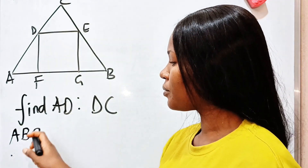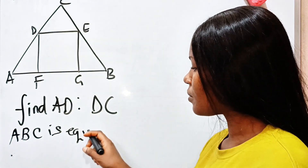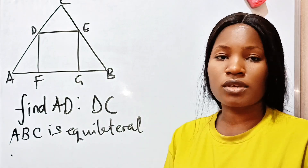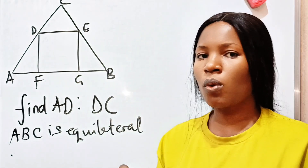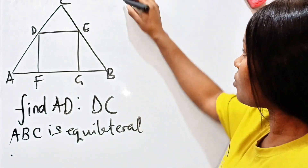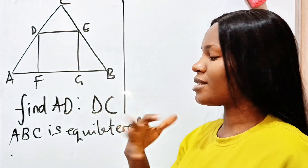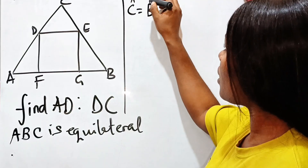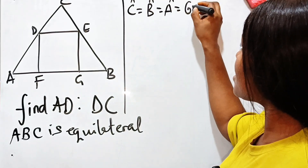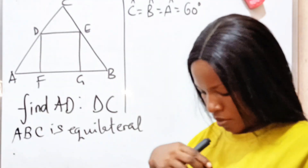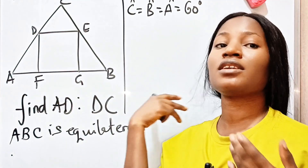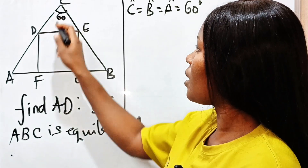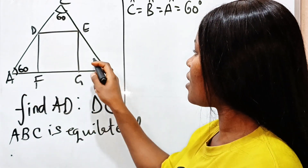So ABC is equilateral. One thing about equilateral triangles is that all the angles are equal and all the sides are equal. So if triangle ABC is an equilateral triangle, it simply means that angle C equals angle B equals angle A, which equals 60 degrees. So here is 60, here is 60, and here is 60 as well.